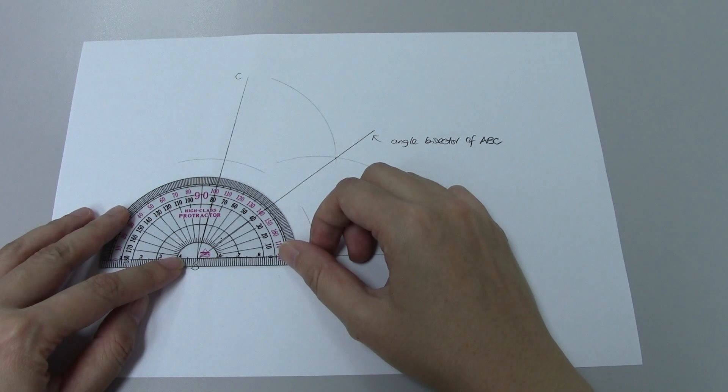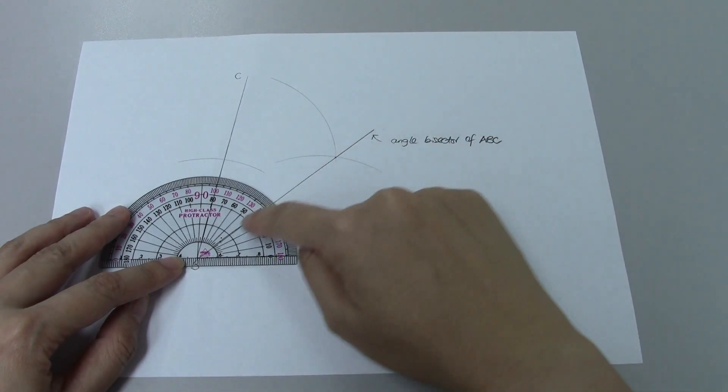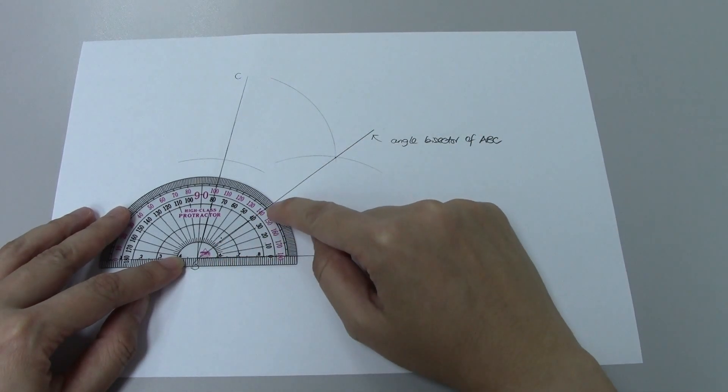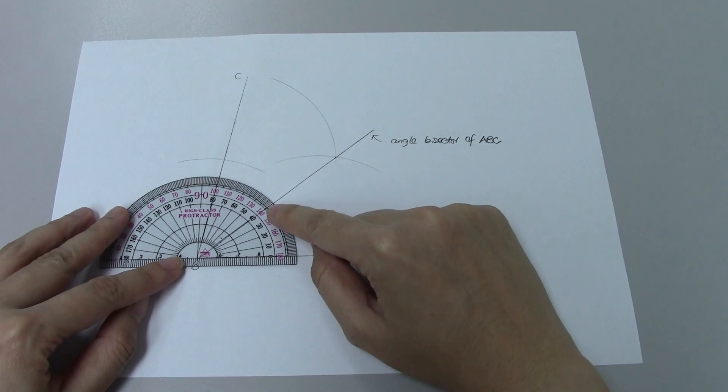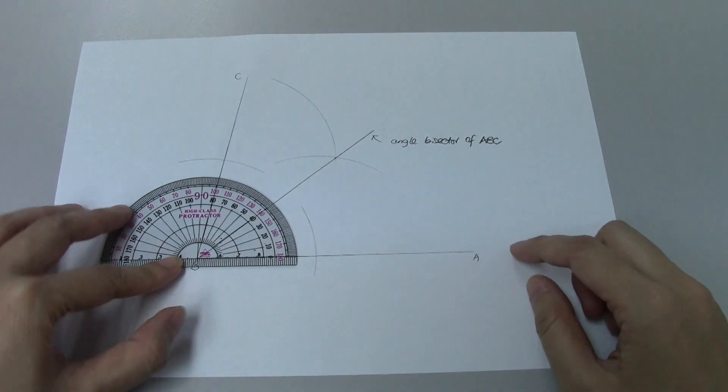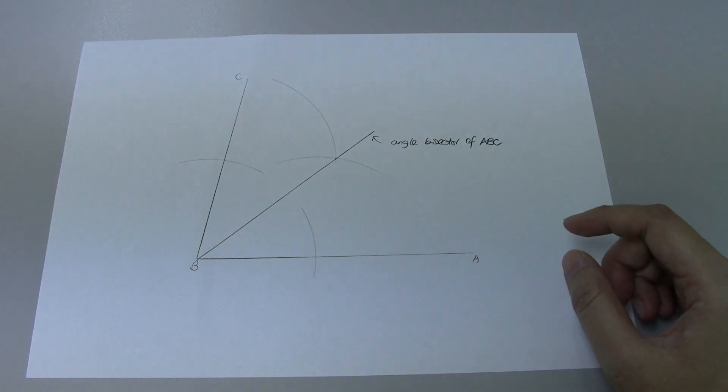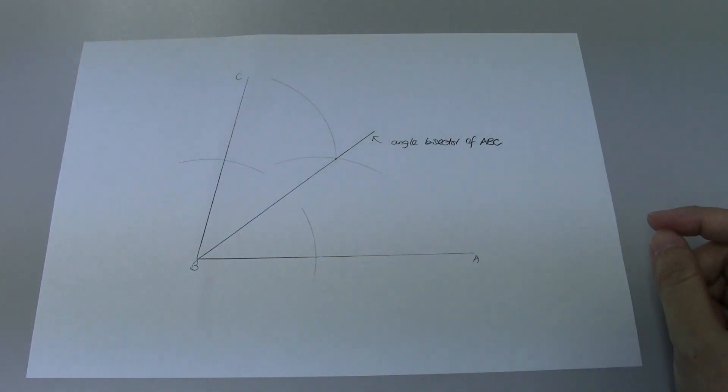So you can see that my angle bisector here actually cuts the angle exactly into half, 40 degrees, 40 degrees. It shows that we have done our construction of angle bisector correctly.